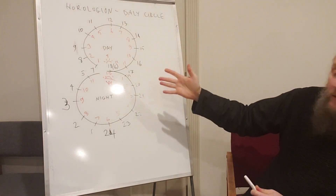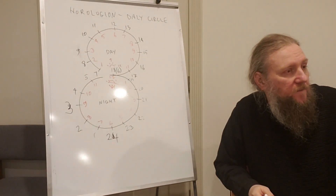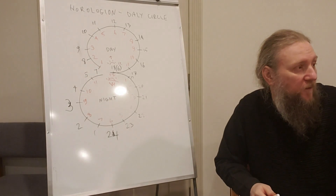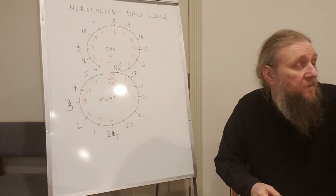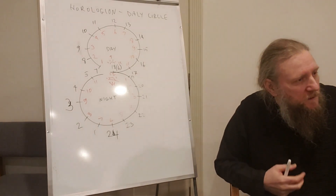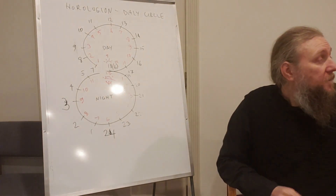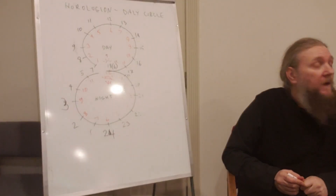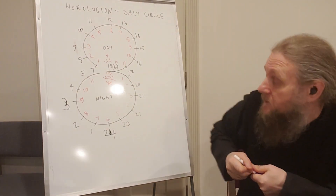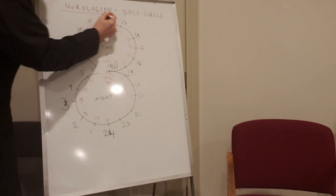Why do we talk about this? Because the Book of Hours - the Horologion - has prayers of the first hour, the third hour, and the sixth hour. This is even mentioned in the Book of Acts, where the apostles went to the temple to pray. The book of hours is going off of the more ancient hours.